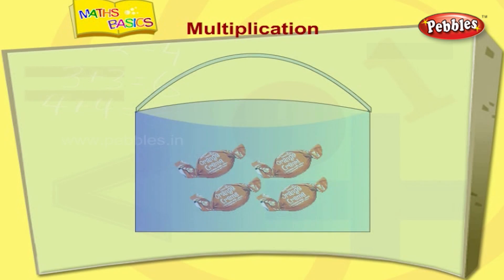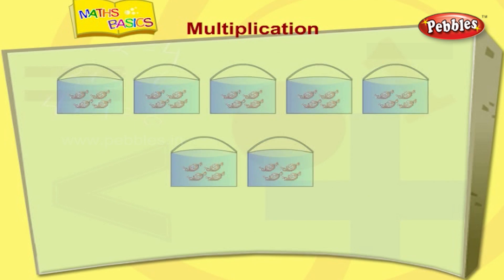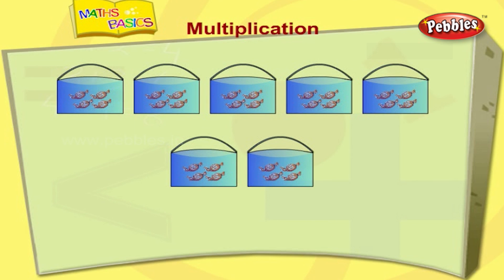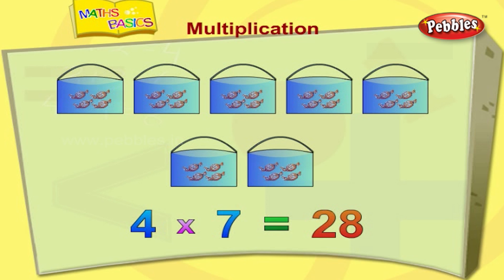There are four chocolates in this bag. There are seven bags here. Can you find how many chocolates there are totally? We have to add the number four seven times. So four times seven is twenty-eight — four sevens are twenty-eight.